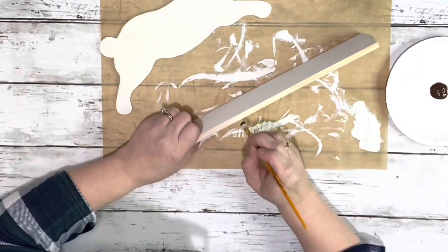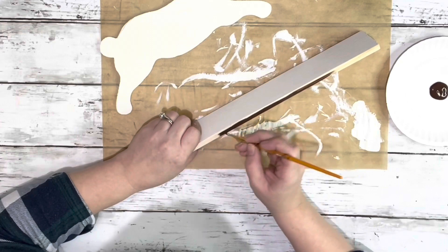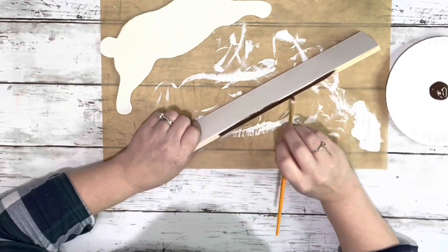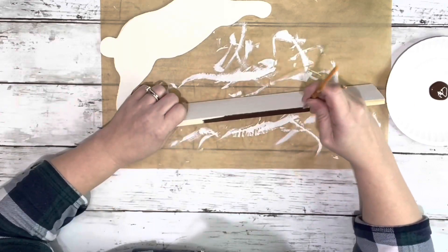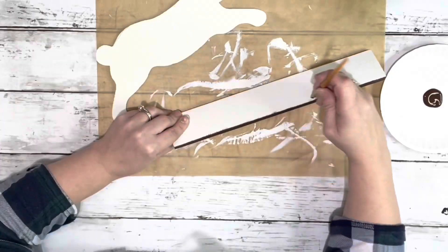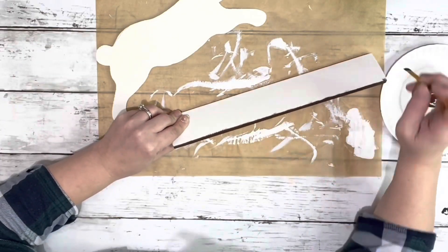Once those were painted, I took burnt umber acrylic paint and I painted the sides of the piece of wood and the bottom in that color. I just wanted it to be a little different, but you can totally paint it just one color.